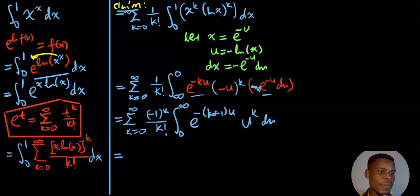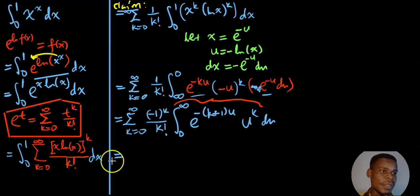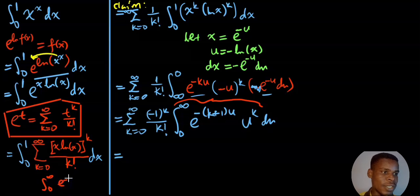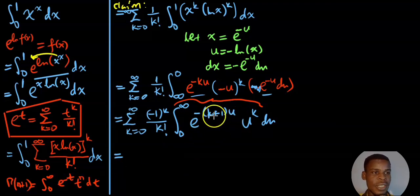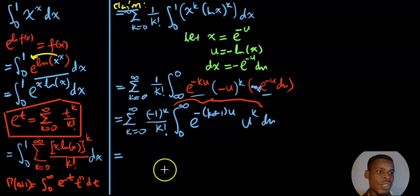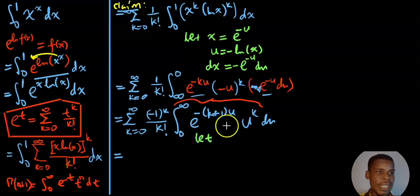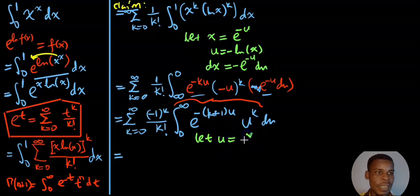This integral looks like a gamma function but isn't quite in the right form because instead of e to the negative u we have e to the negative (k+1)u — there's a constant factor. The trick here is to make a clever substitution. Let u equal v divided by k plus 1. I'm doing that so I can cancel out the k plus 1 when substituting.